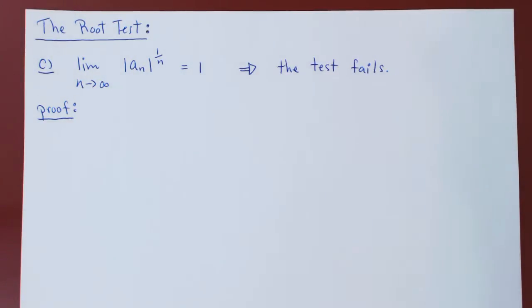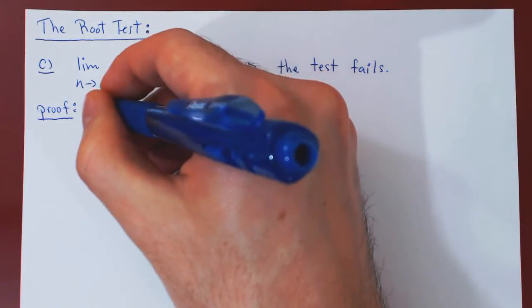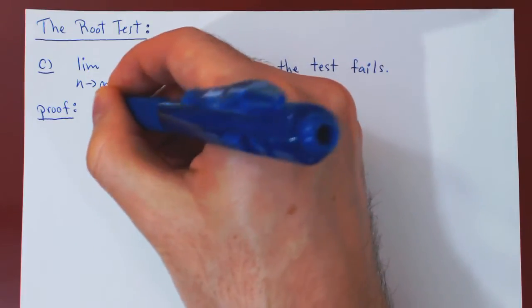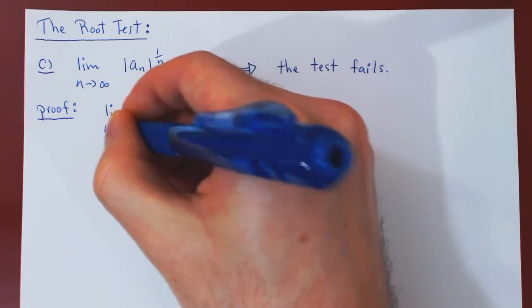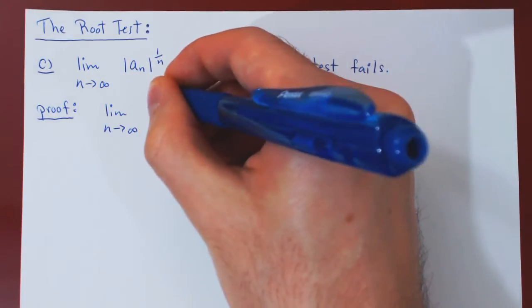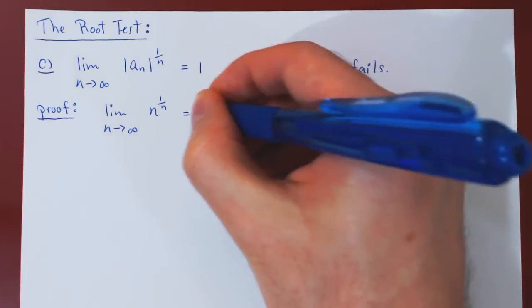Before we do so, we have to recall a key limit, and that is that as we let n tend to infinity, the nth root of n converges to 1.